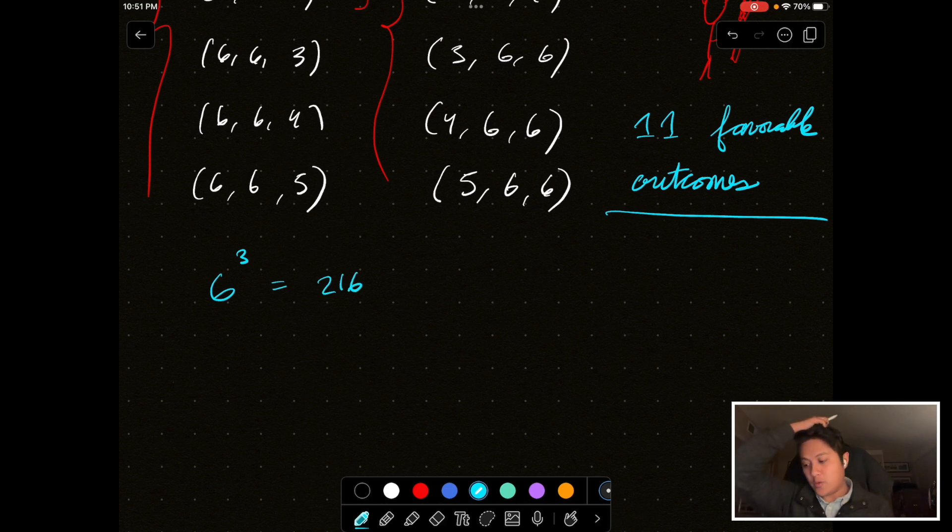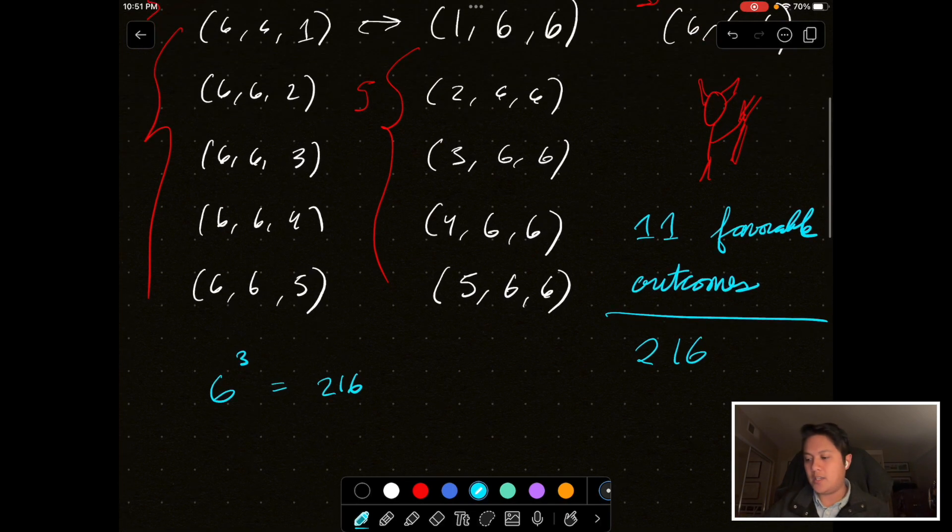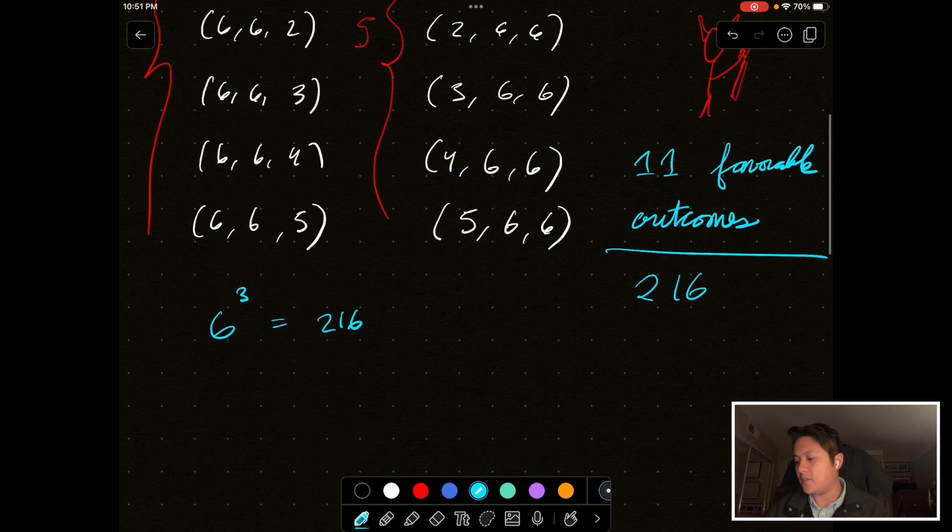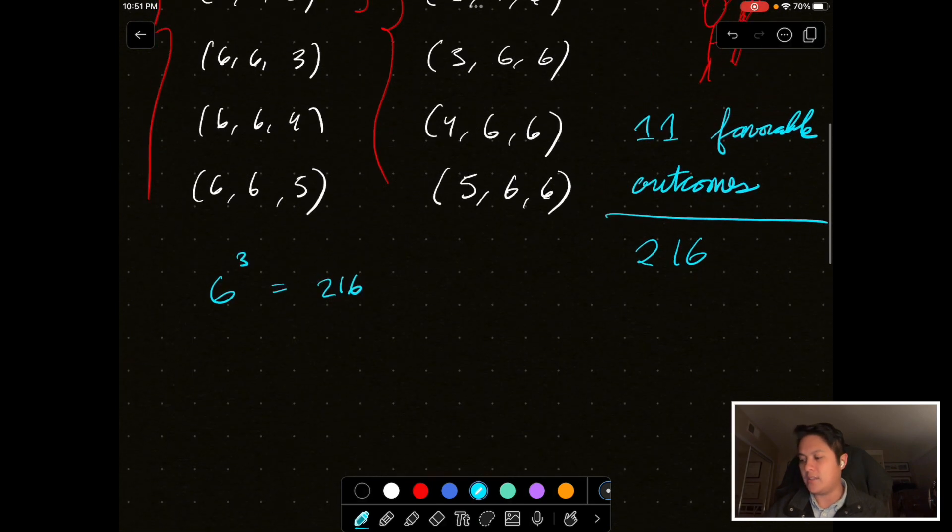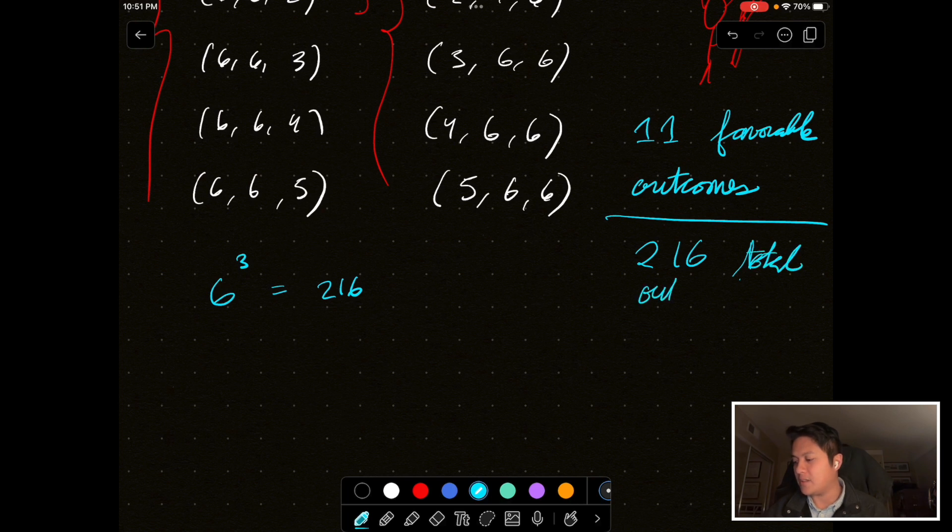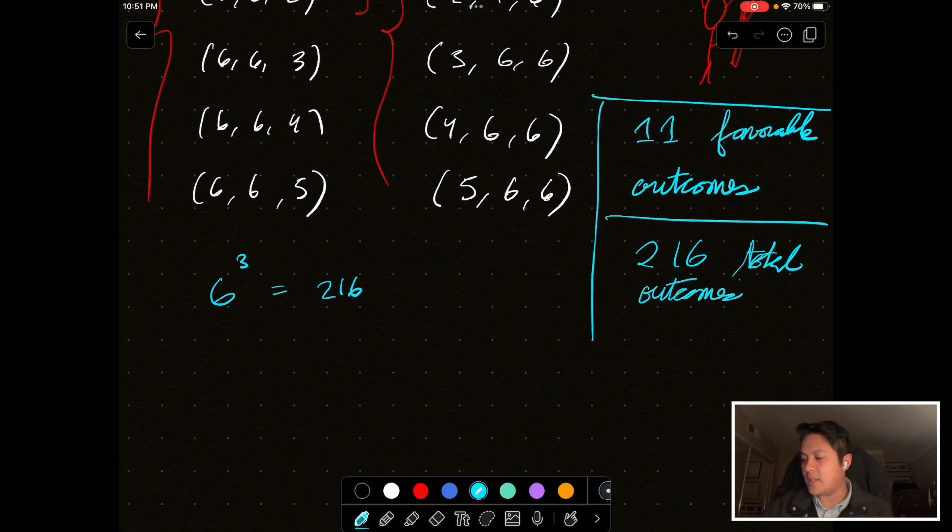So, we have 216 possible outcomes, but we have 11 favorable outcomes. And, so, the probability of getting these consecutive sixes happening is 11 over 216. Okay, so, 11, I'll just write 216 total outcomes. Hopefully, my cursive is somewhat legible, but at least I'm saying what these words are. So, this is the answer.